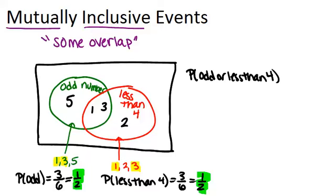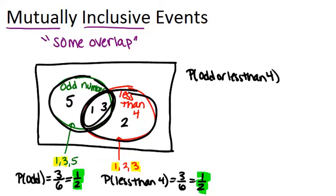If we look at our Venn diagram, what you'll notice is if you add up the two probabilities, you're counting this center section, where the 1 and the 3 are, twice. You've counted that probability in the odd number and in the less than 4.